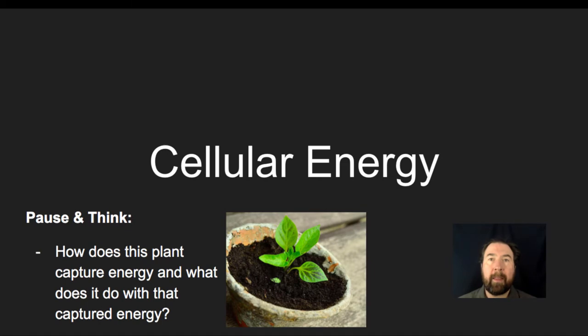All right, so hopefully you came up with the idea that this is a plant and it is a producer or autotroph, which means that it captures sunlight and then utilizes the energy from sunlight to convert carbon dioxide and water into carbohydrates and other organic molecules. So it's able to build and store chemical energy in organic molecules by converting light energy into that stored chemical energy.